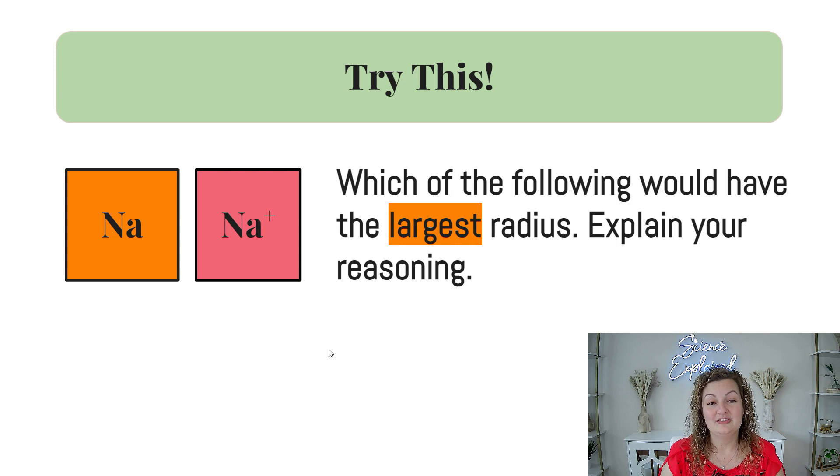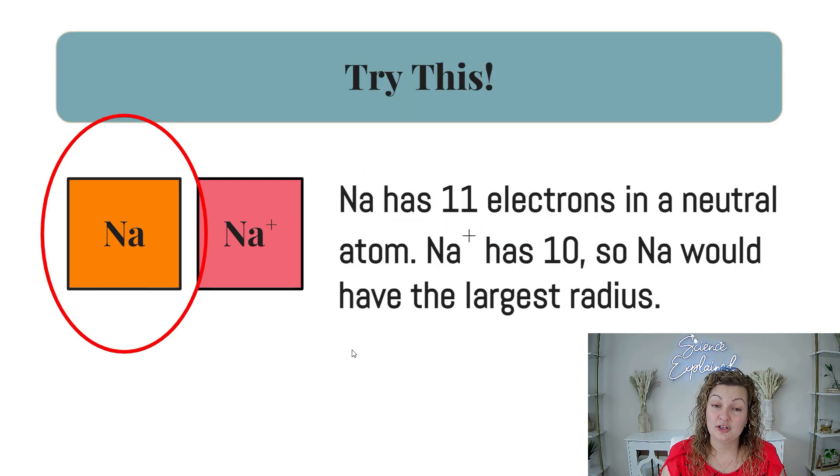All right, let's try a couple. So which of the following would have the largest radius? And then try to see if you can explain your answer. Pause the video and I'm going to tell you the answer in just a second. All right, here we go. So focus on electrons first, okay? So sodium has 11 electrons. And if we're evaluating how many electrons sodium positive has, it has 10, right? Because it gave one electron away. Therefore, sodium is going to have the largest radius and sodium plus is going to be a little bit smaller just because 11 is larger than 10.